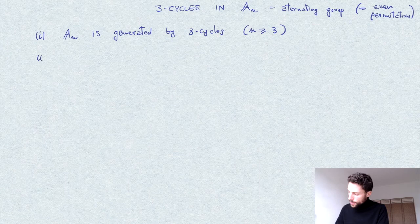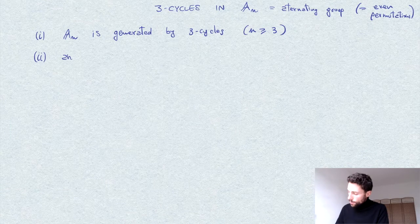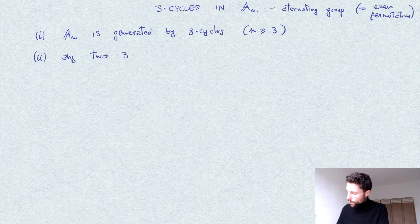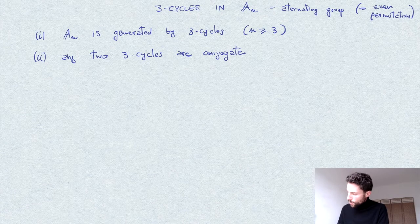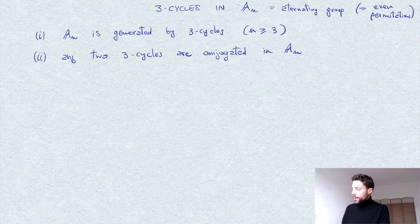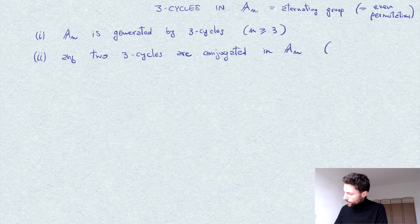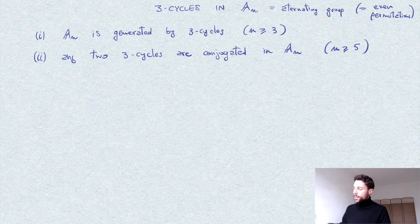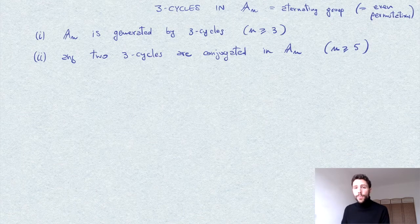The second interesting fact is that for n at least five, any two three-cycles are conjugate in An. The key point is that they are conjugated within elements of An — otherwise it would be obvious, since any cycle of a given length is conjugate in Sn. The condition n ≥ 5 is necessary: for example, for n = 4, it is not hard to show that the cycle (123) is not conjugate to its inverse (132) inside A4. Let's proceed with the proof.